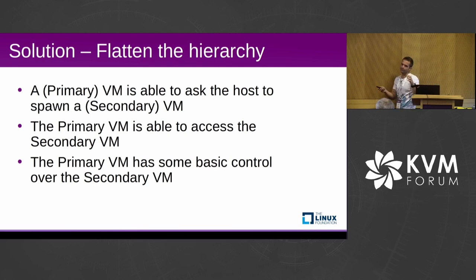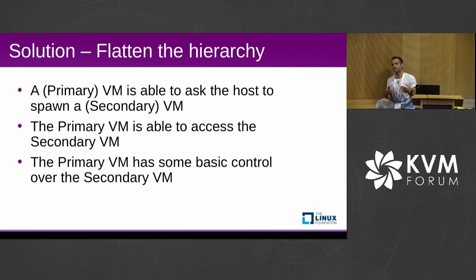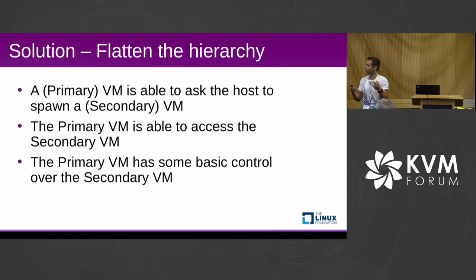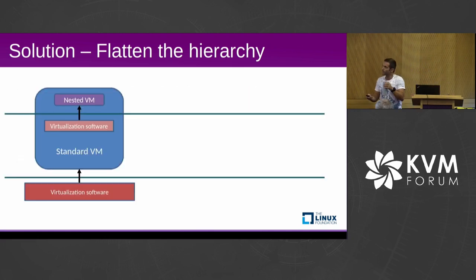KVM already does some kind of hierarchy flattening — it has a VM control structure for nesting and a shadow page table that accelerates some operations, which solves some performance problems but not all. IO latency is not really as good, and you're still missing features like hardware encryption.